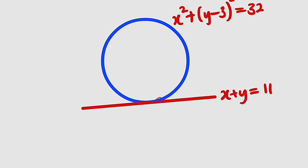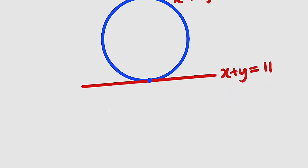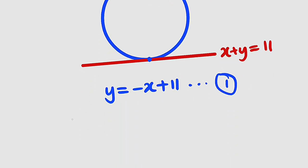What we want to find is this point. If we realize exactly one point, it means this line is a tangent to the circle. Let us make y the subject from here. So y will be equal to negative x plus 11. Let's call this equation number 1, and we are going to plug it into the equation of the circle, which is x squared plus y minus 3 whole squared equal to 32.